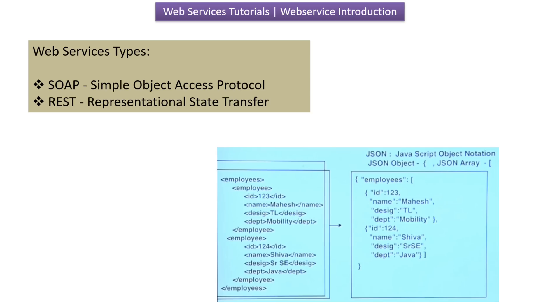There are two types of web services. The first one is SOAP, which stands for Simple Object Access Protocol. The second one is REST, which stands for Representational State Transfer.